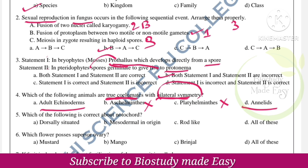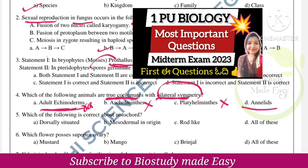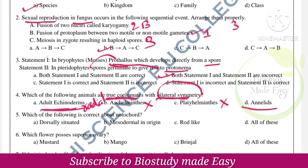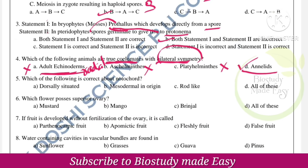Echinoderms — this is very very important — in adults, echinoderms have radial symmetry, not bilateral symmetry. So the right option is option D, Annelids. And note that larval echinoderms do show bilateral symmetry — that would be the right answer for a related question.